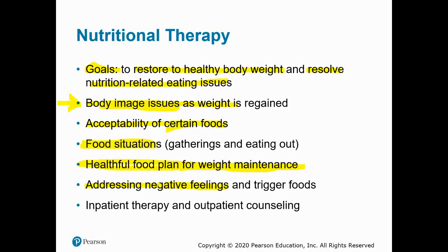Treatment also addresses negative feelings and emotions around eating and identifies trigger foods. There may be inpatient therapy working with a counselor and therapist, as well as outpatient counseling. In cases of severe anorexia nervosa, a person may actually be on IV nutrition support before they can even eat foods, so therapy in that inpatient setting is very helpful in the early stages, continuing once a person is an outpatient again.